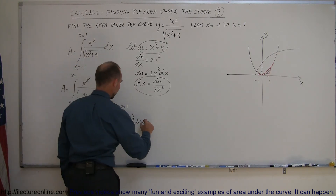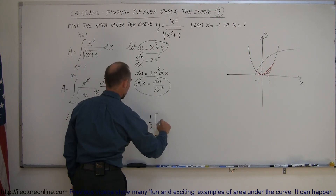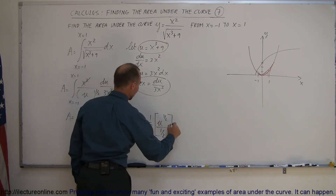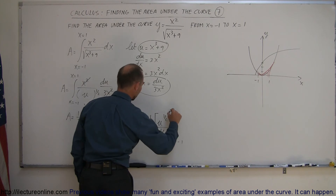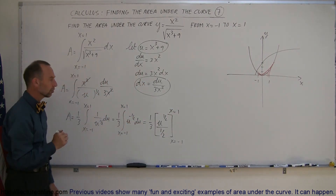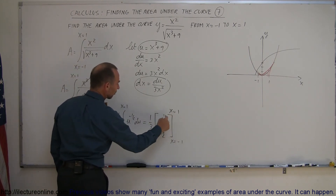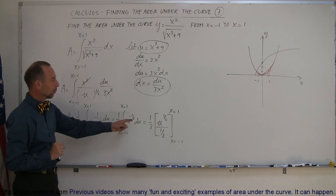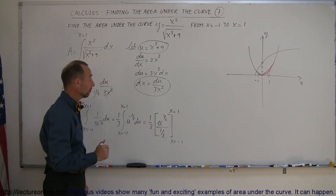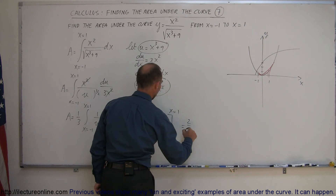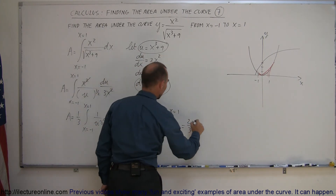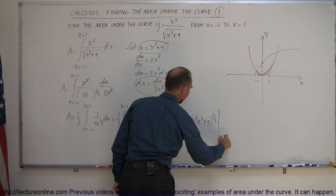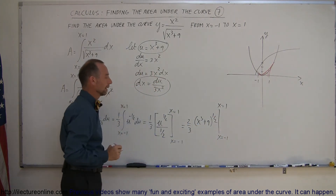Integrating u to the negative 1/2: add 1 to the exponent to get u to the 1/2, then divide by the new exponent 1/2. Dividing by 1/2 is the same as multiplying by 2, so we get 2/3 out front. Since the limits of integration are in x, I need to convert back: replacing u with x cubed plus 9, the antiderivative becomes 2/3 times (x cubed plus 9) to the 1/2 power, evaluated from x equals negative 1 to x equals 1.